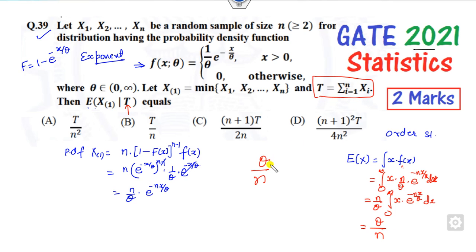You can find the value of θ in terms of T. That's very simple. This is an exponential distribution. The mean of the exponential distribution is 1/λ, or